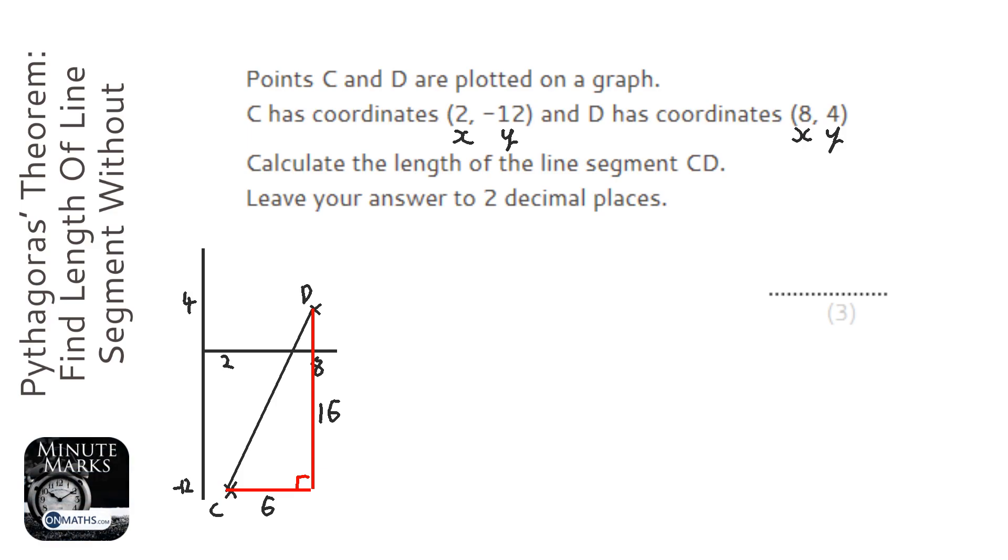So what we're going to do now is label our sides. So the one opposite the right angle, we always say C with Pythagoras. And this one is A and this one is B. It doesn't matter which way around we do.